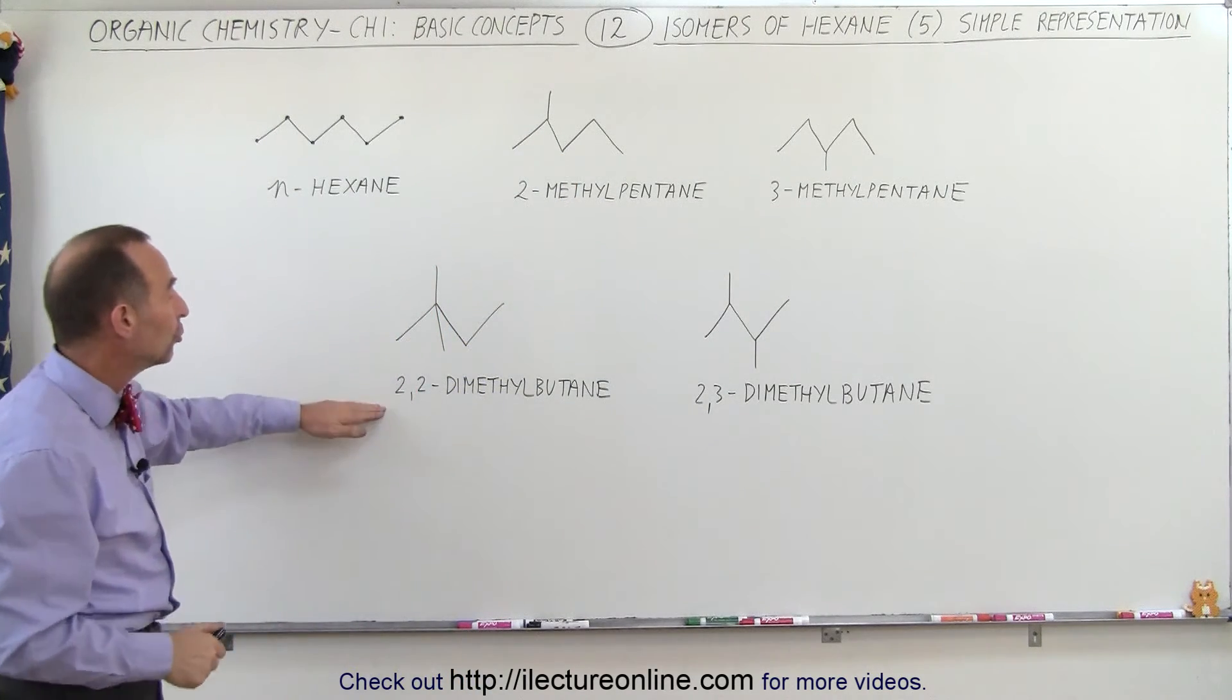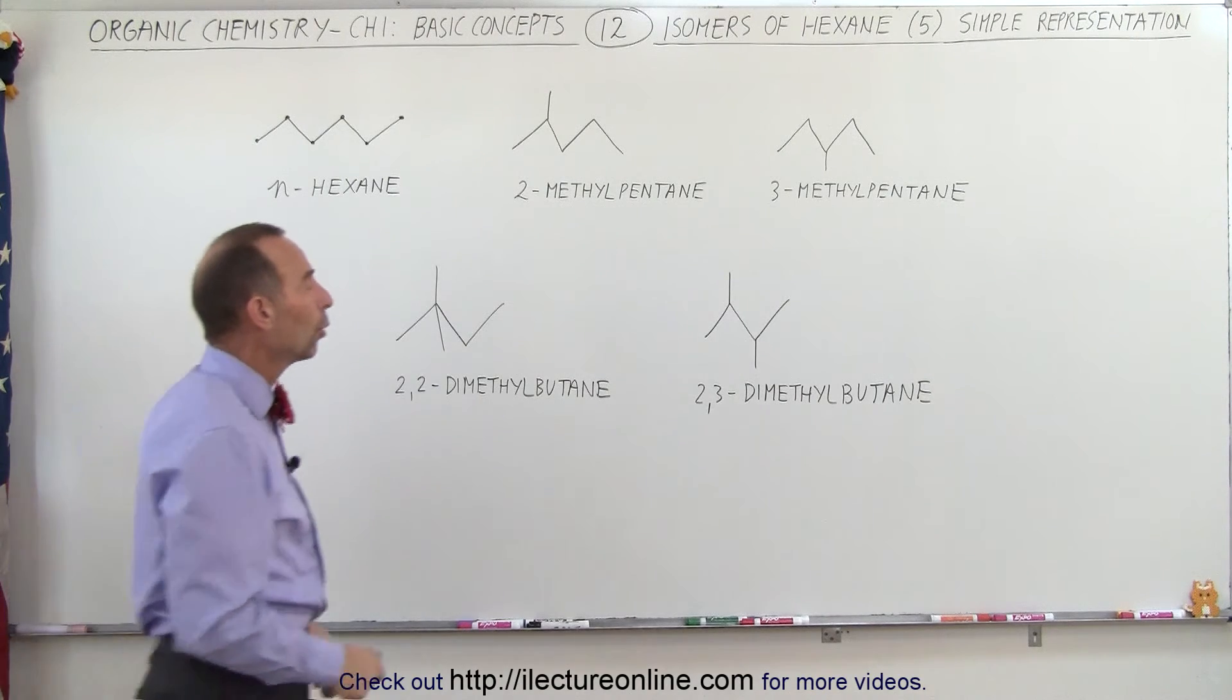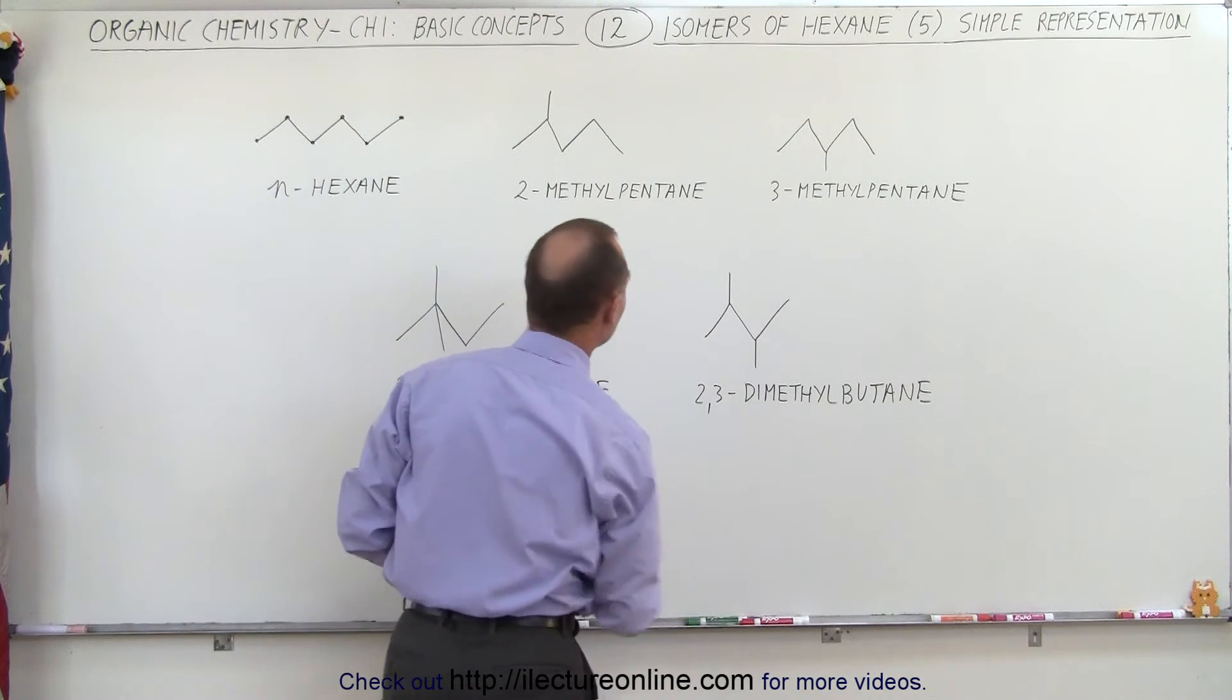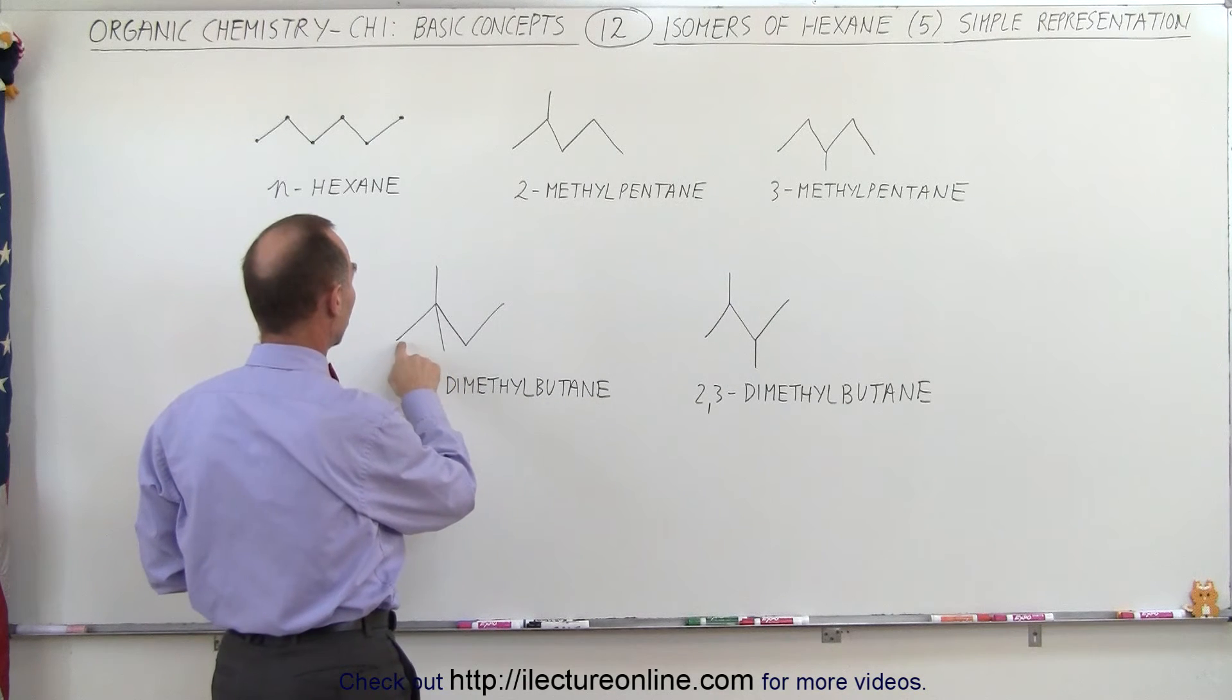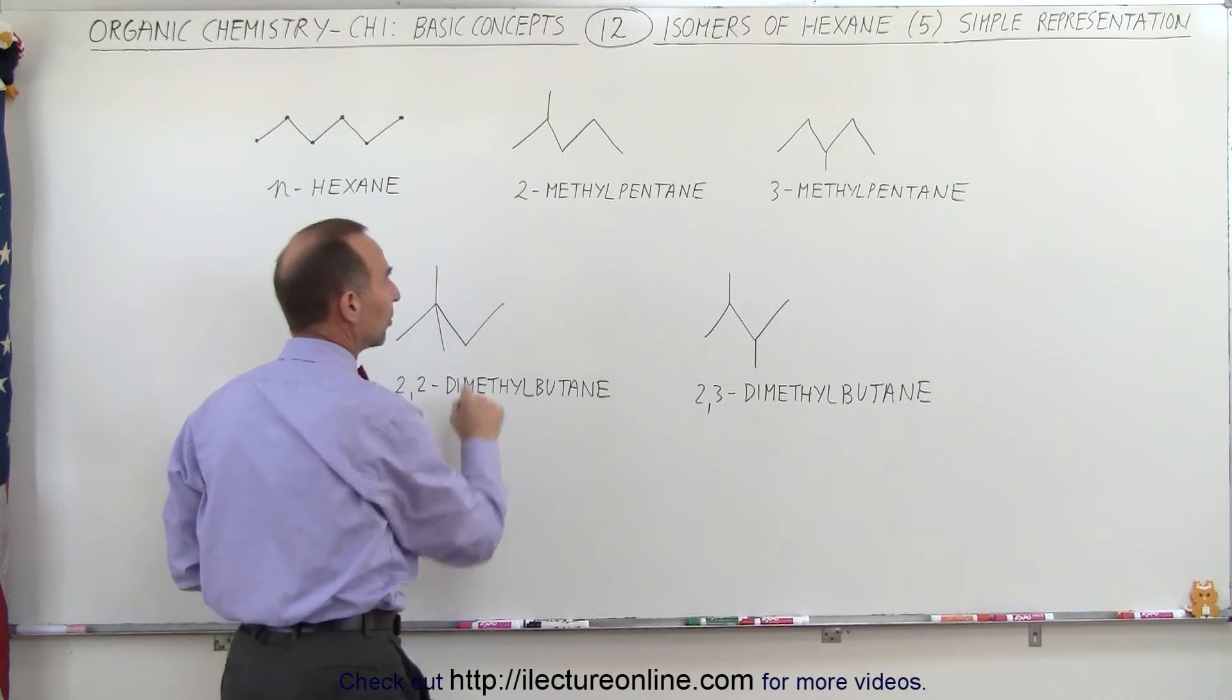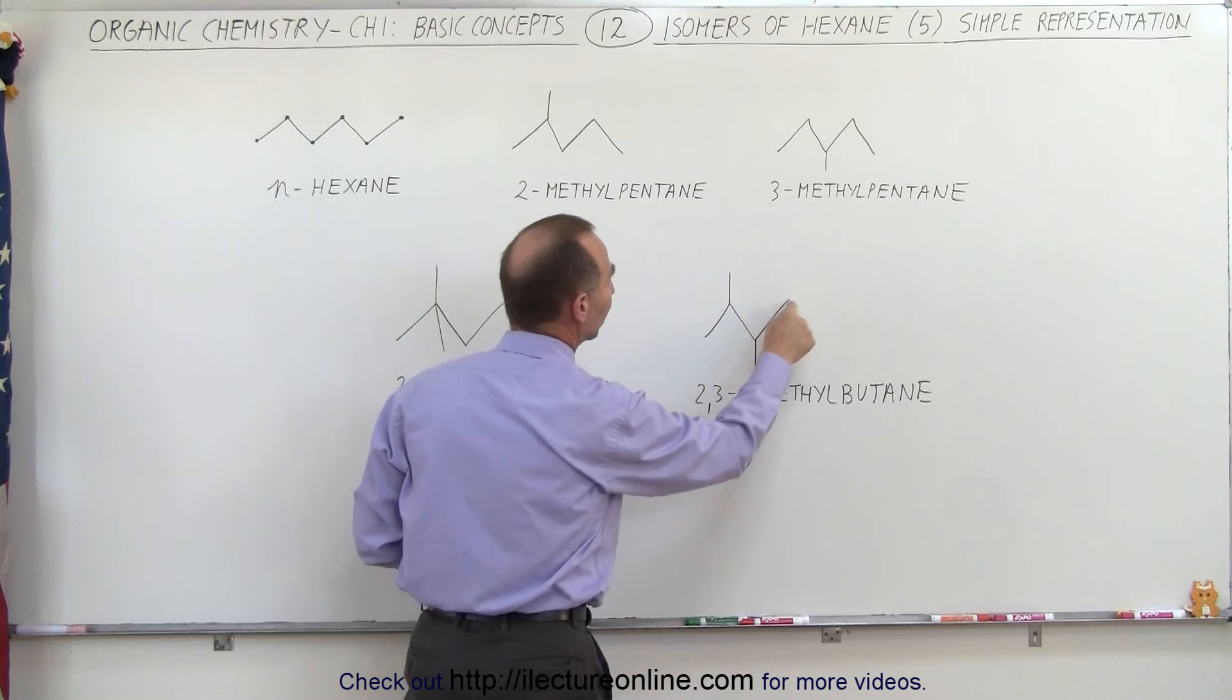Or we can have the 2,2-dimethylbutane or the 2,3-dimethylbutane. Butane because now we only have 1, 2, 3, 4 carbons in the chain.